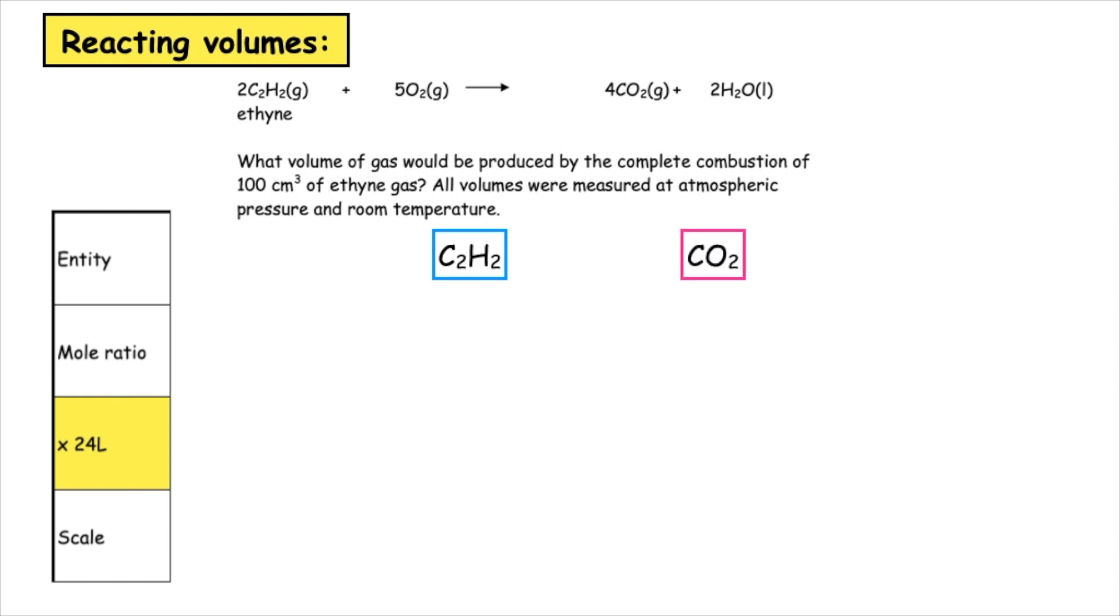We then have to pick out the mole ratio from the balanced equation. We've got two ethines and four carbon dioxides. We then times by 24 litres to put it into the correct unit. 24 times 2 gives me 48 litres of ethine and 4 times 24 litres gives me 96 litres of carbon dioxide.